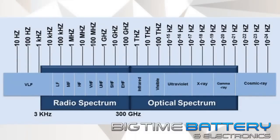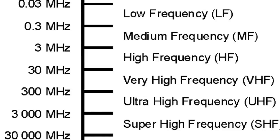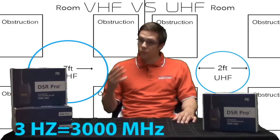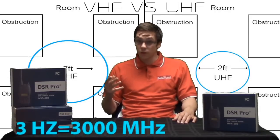Next on our chart, to the right of VHF, we will see UHF or ultra high frequency, with the range starting at 300 MHz and all the way up to 3 GHz.